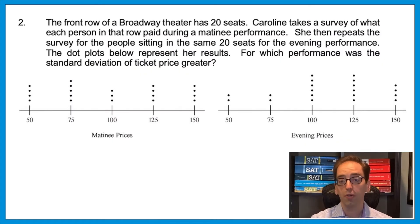Let's see how this can be tested another way. Question two: The front row of a Broadway theater has 20 seats. Caroline takes a survey of what each person in that row paid during a matinee performance. She then repeats the survey for the people sitting in the same 20 seats for the evening performance. The dot plots below represent her results. For which performance was the standard deviation of ticket price greater? So looking at the left, the matinee goes from 50 to 150, and on the right, the evening also goes from 50 to 150. They both have the same range.